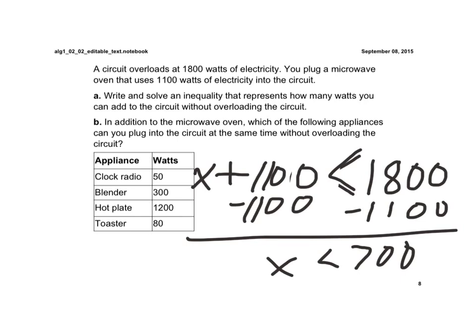And so if we look at this, the only one we can't do is the hot plate because if we plug in the clock radio and we plug in the blender and we plug in the toaster, all those, even if we plug all of them in, it doesn't add up to more than 700, and it just has to be less than 700. So we have to take away the hot plate.